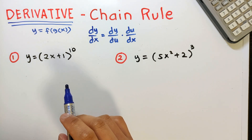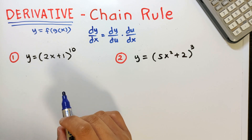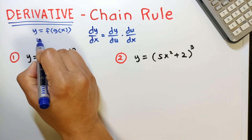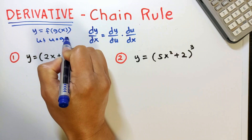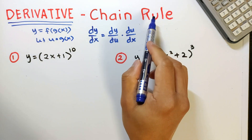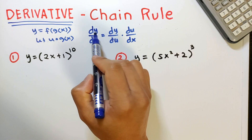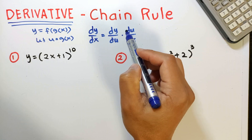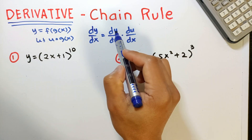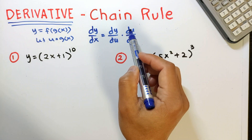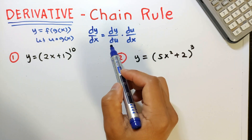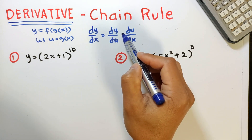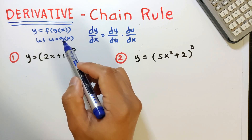The chain rule is a fundamental concept in calculus used to differentiate composite functions. Given y equals f of g of x, and let u equals g of x, the inner function, then according to the chain rule, the derivative of y with respect to x is equal to the derivative of y with respect to u times the derivative of u with respect to x. Note that y here is the outer function and u is the inner function. So this simply means we need to differentiate the outer function with respect to u and then multiply it with the derivative of the inner function.